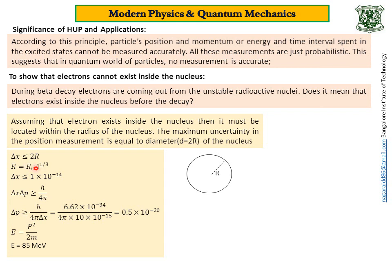Substituting the value of r, delta x comes out to be less than 1 times 10 to the power of minus 14 meters. Now use the uncertainty principle: delta x times delta p is greater than or equal to h by 4 pi, so delta p is greater than or equal to h divided by 4 pi times delta x. Substituting the values of h and delta x and simplifying, delta p comes out to be 0.5 times 10 to the power of minus 20 kg·m/s.